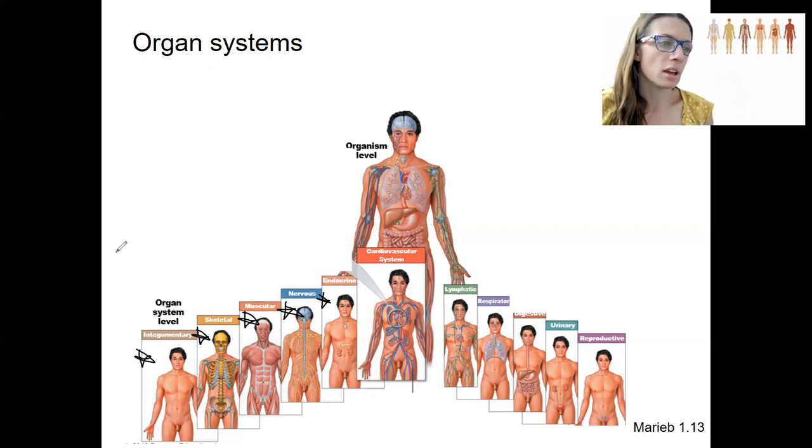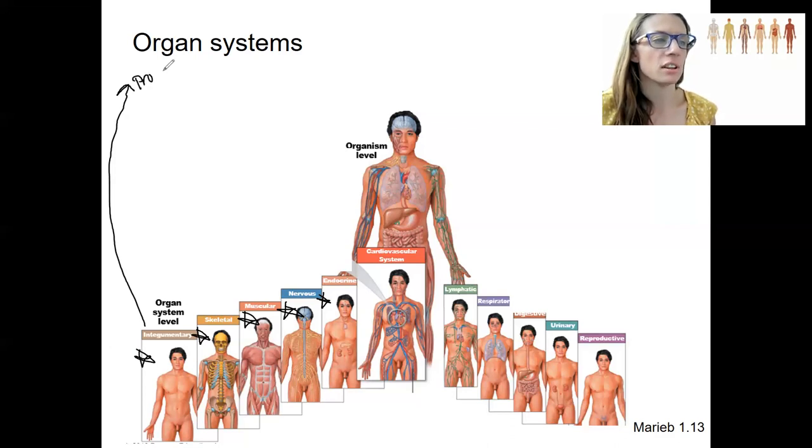So integumentary, and again, we're going to talk about all of these ones in much more detail. So integumentary is basically your skin, that's the biggest part of it - skin, hair, and nails. It's protection against environmental hazards and control body temperature. It's going to protect, for protection. I'm going to do some different colors here just to mix this up.